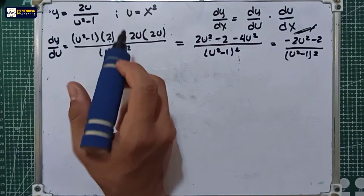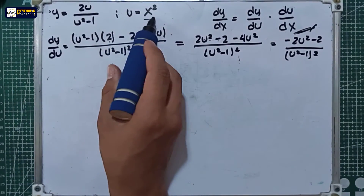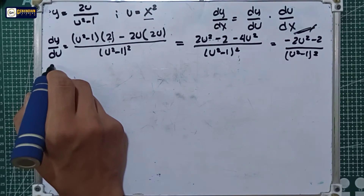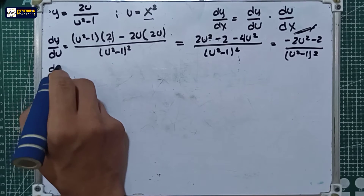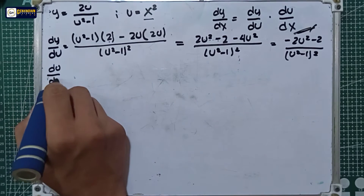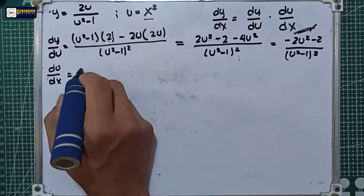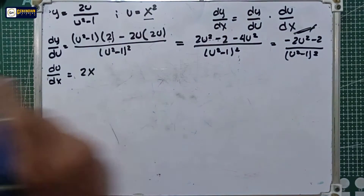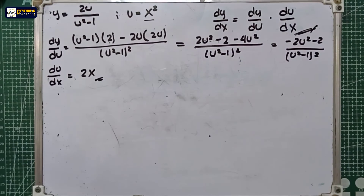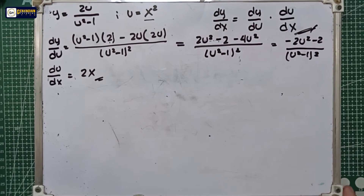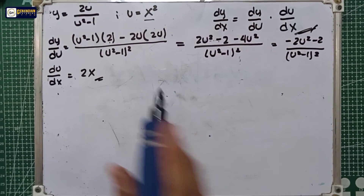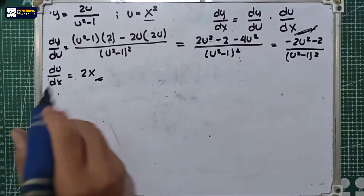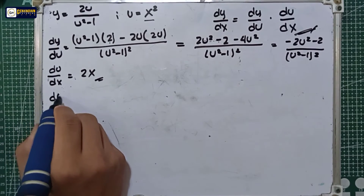The next step is to derive the u equation with respect to x, so du/dx is equal to 2x. We are now ready to apply the chain rule.